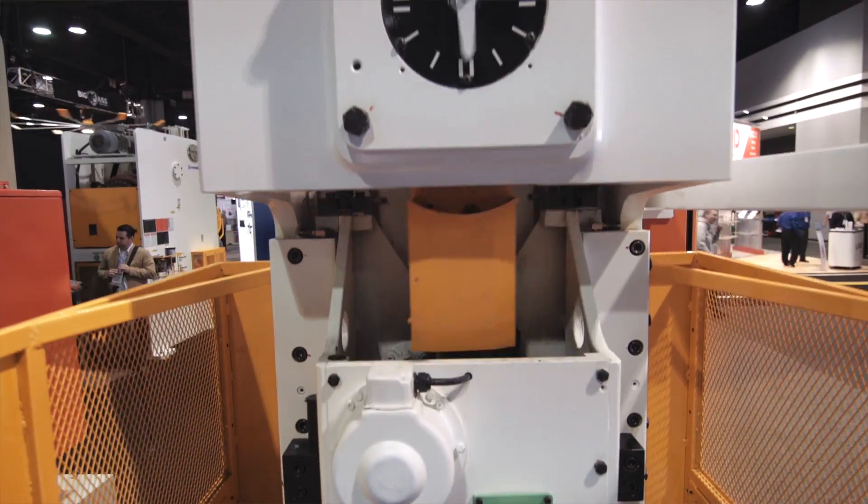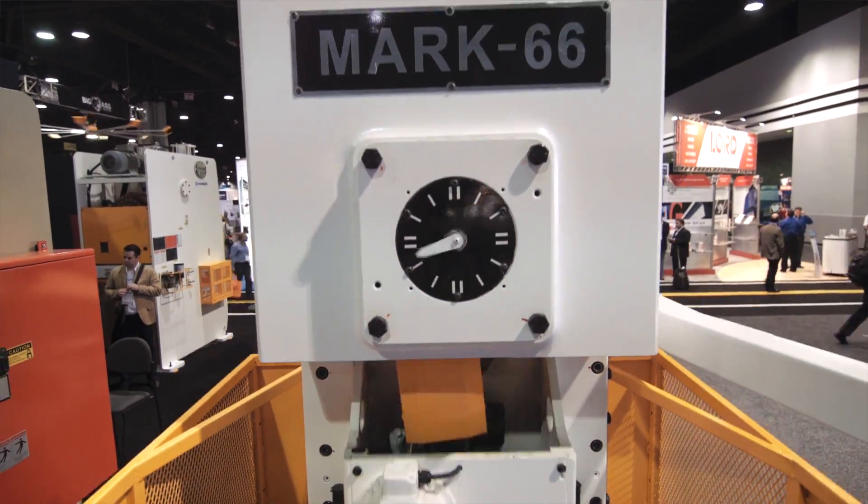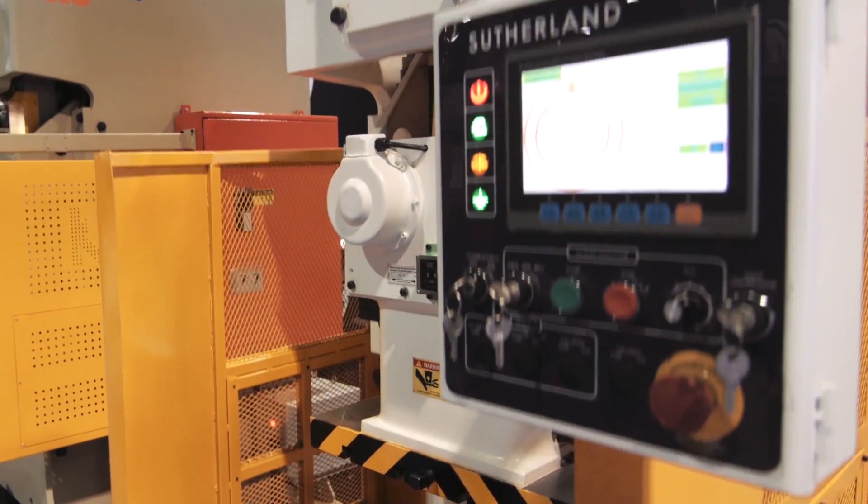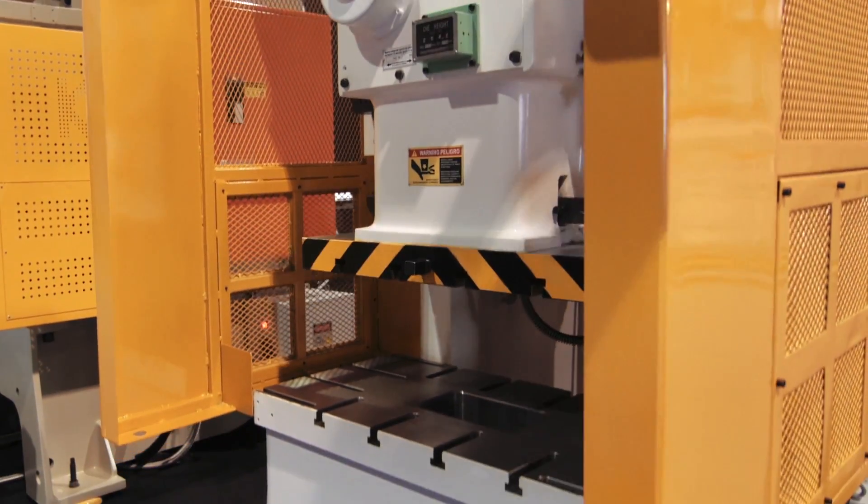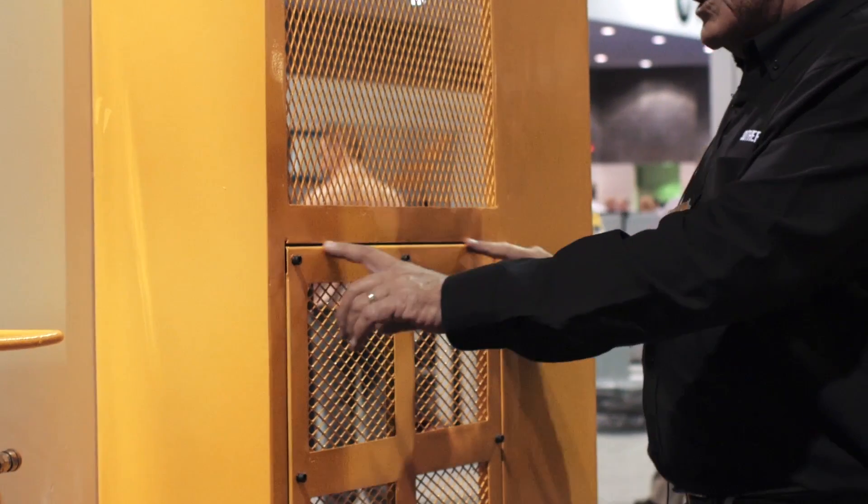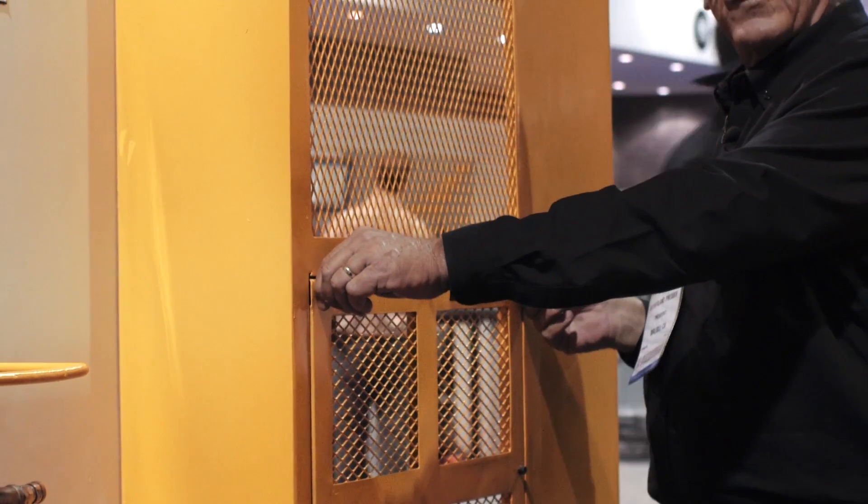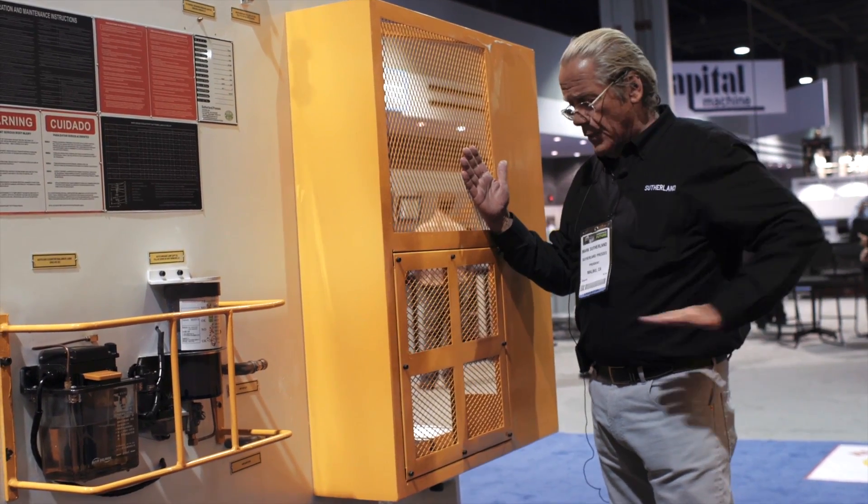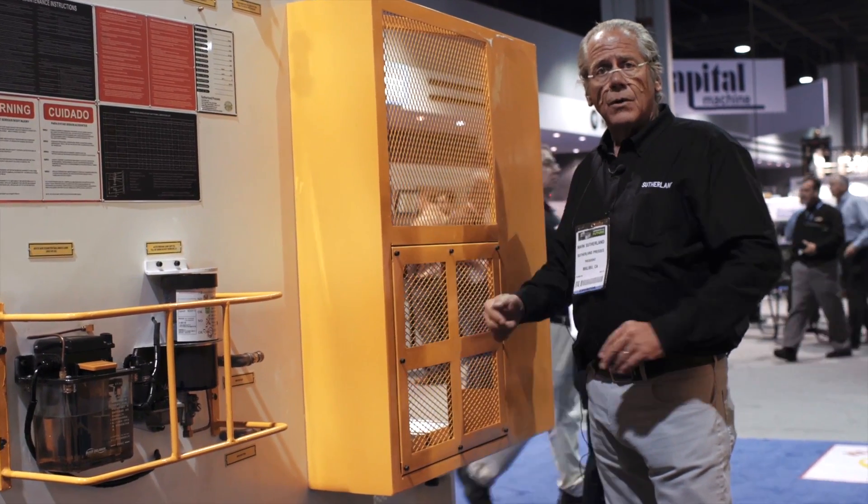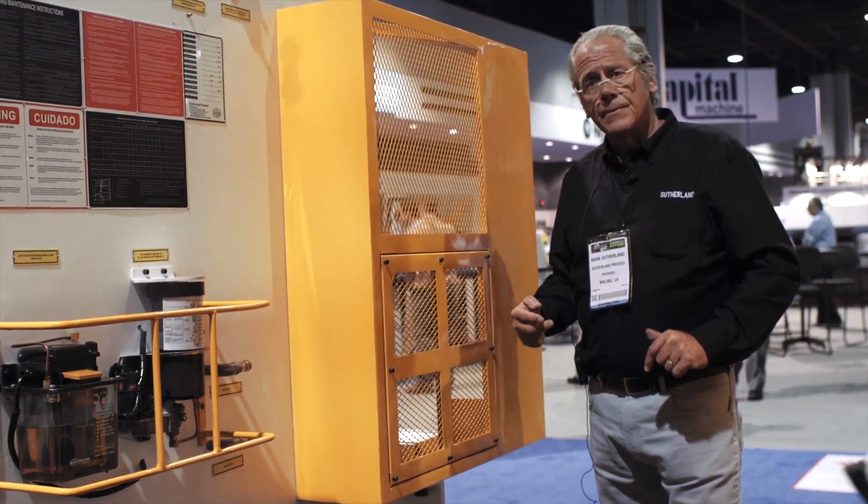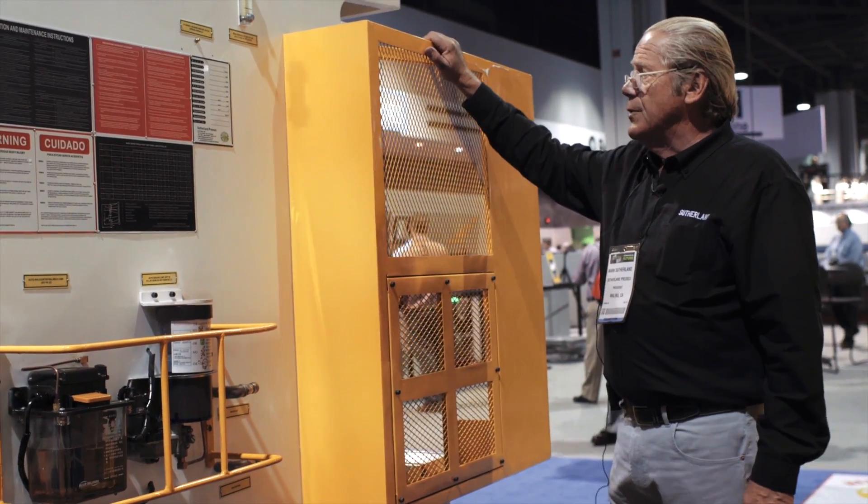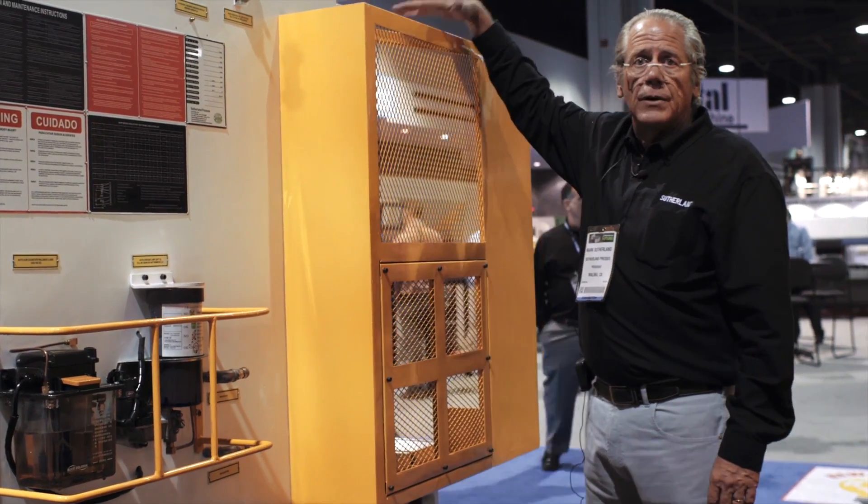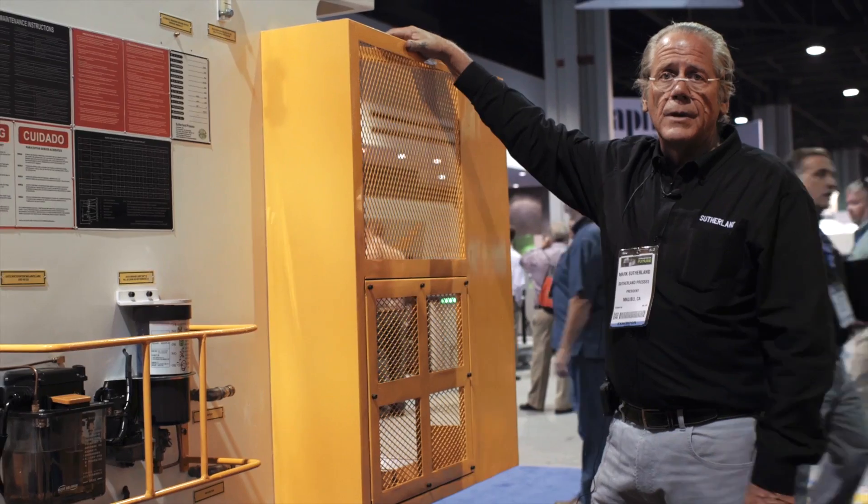We also include, as a standard feature, side guards, which can be taken off for automated operations. The lower section of the side guard is removable, allowing you to keep the master guard on if you want to add coil feeders or outbound scrap cutters. And they're at a six foot level, so nobody can reach over and enter the pinch point on the press.